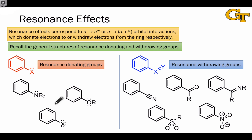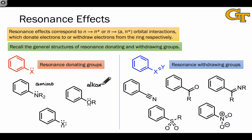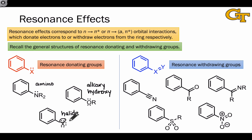Here are some important examples of resonance donating and withdrawing groups. The NR2 group is an amino group, and it has a nitrogen bearing a lone pair connected directly to the benzene ring — typical of a resonance donating group. OR can be either alkoxy, if R is an alkyl group, or hydroxy, if R is hydrogen. The only difference between amino and the OR group is the presence of oxygen instead of nitrogen. The halide X is also donating by resonance. Despite our intuition that this is an electronegative, electron withdrawing atom, it does fit the general pattern of a resonance donating group.